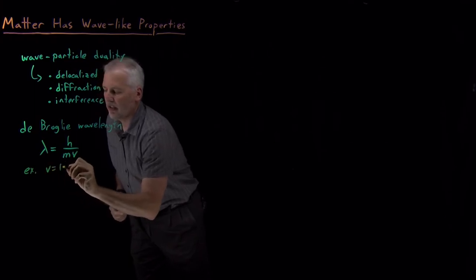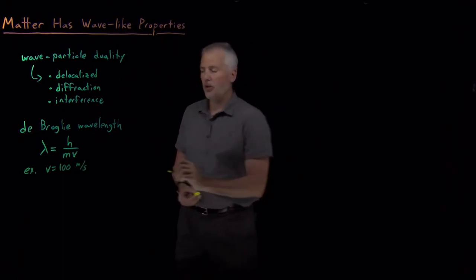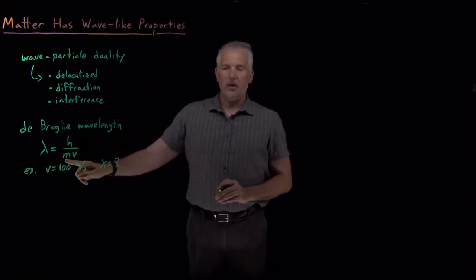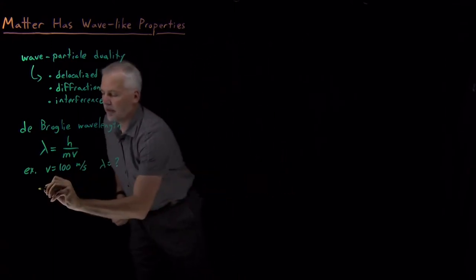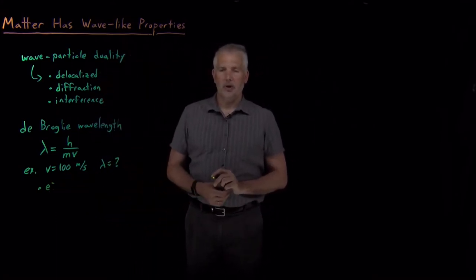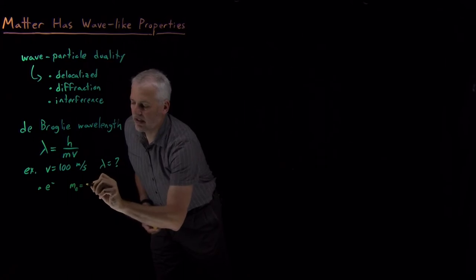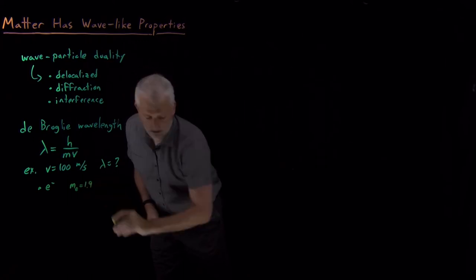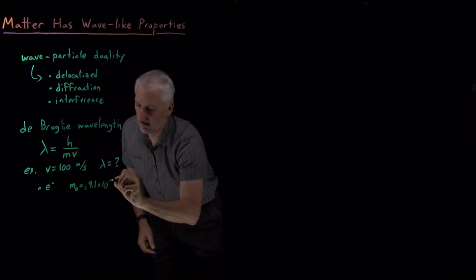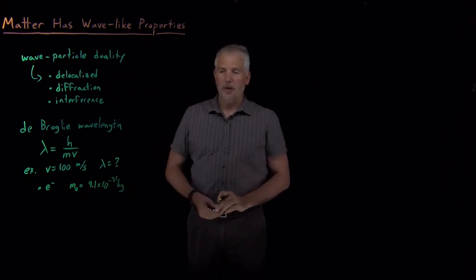Let's say a particle is moving with a velocity of 100 meters per second and we want to know what its wavelength is. We'll do this for several different particles. Given the velocity, we know Planck's constant — the only other thing we need to know is the mass. First, for the smallest particle we can think of in a chemistry class: an electron. The mass of an electron is 9.1 times 10 to the minus 31 kilograms. That's a tiny, tiny mass.